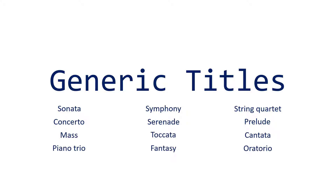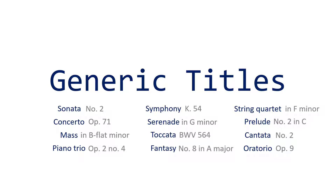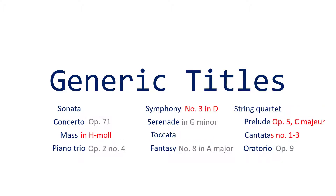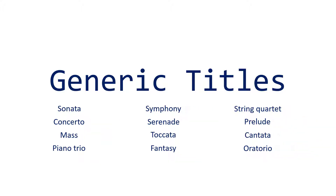Because they're generic, you'll often see numbers or keys next to the title to differentiate between them. The tricky thing about searching for this kind of music is that catalog records don't always include these numbers or keys, or they write them differently, or they include other numbers like dates, CD track timings, number of pages in a score, and so on. So when you search, it's best to leave off the numbers and keys, at least to start.